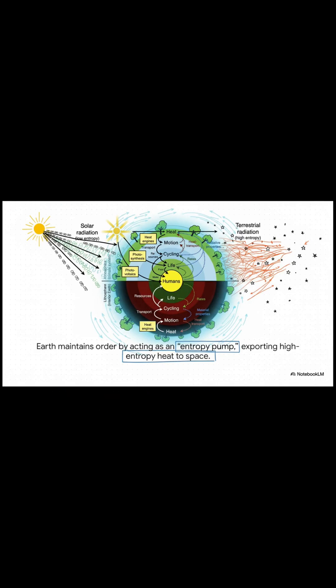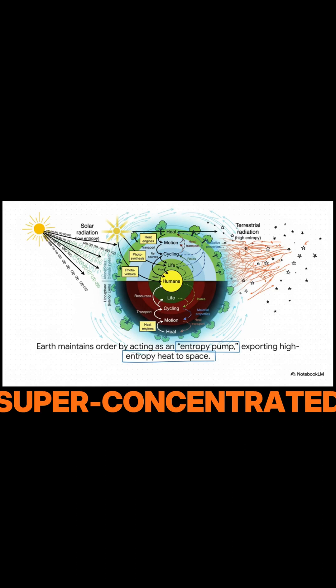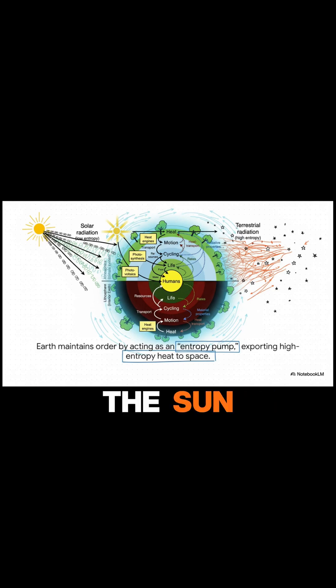The Earth is what's called an open system. It's constantly getting this blast of super-concentrated, low-entropy energy from the Sun. It uses that amazing energy to create order, to grow rainforests, to power entire ecosystems.